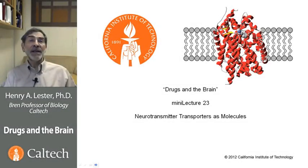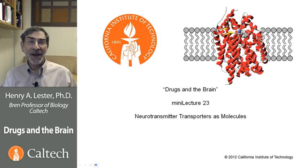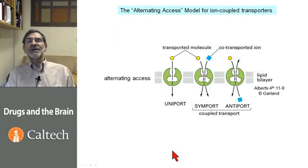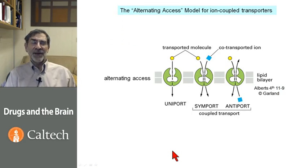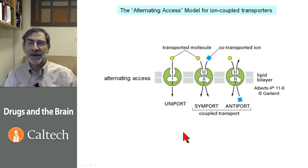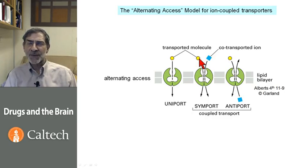In this final mini-lecture on neurotransmitter transporters we are going to discuss them as proteins and count them. It's important to discuss what we call the alternating access model for how ion-coupled transporters actually work. They have the problem of linking the transport of an ion to the transport of another small molecule.